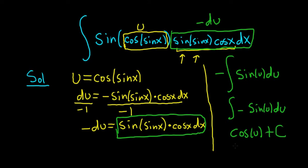And so u is the cosine of sine x. So this is the cosine of the cosine of sine x, plus our constant of integration c.